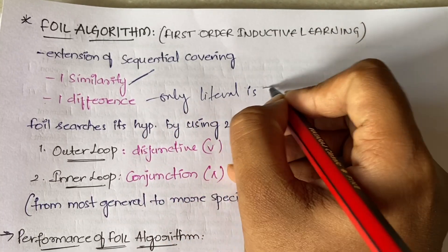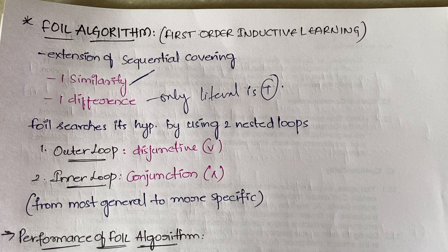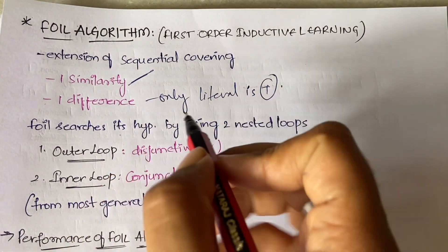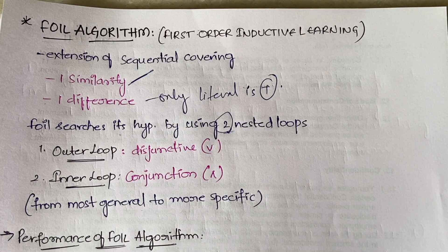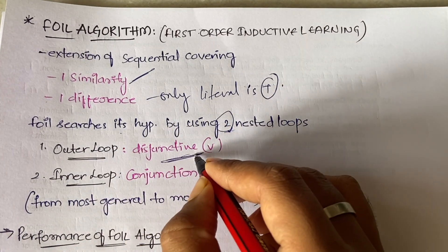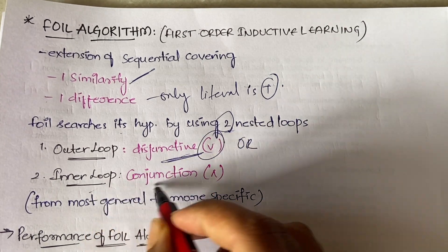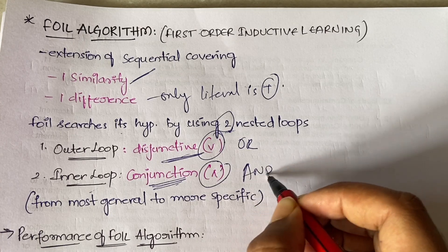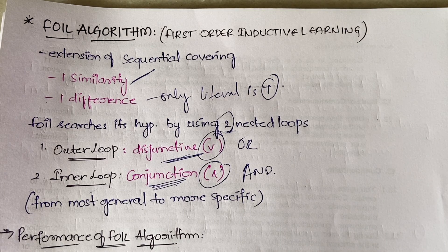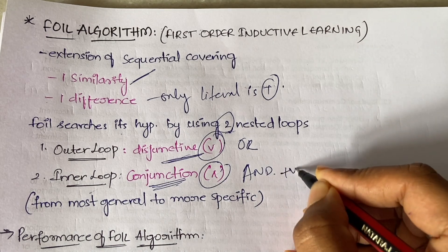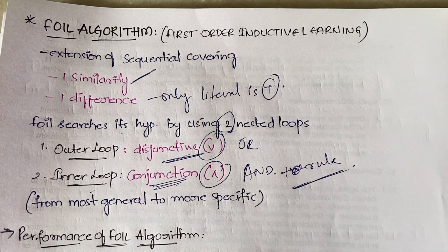FOIL searches its hypothesis using two nested loops. The outer loop uses a disjunctive function (OR), and the inner loop uses a conjunctive function (AND). The inner loop also generalizes from the most general to the most specific hypothesis. In each iteration of the inner loop, it keeps adding a literal to the rule based on the condition being checked.